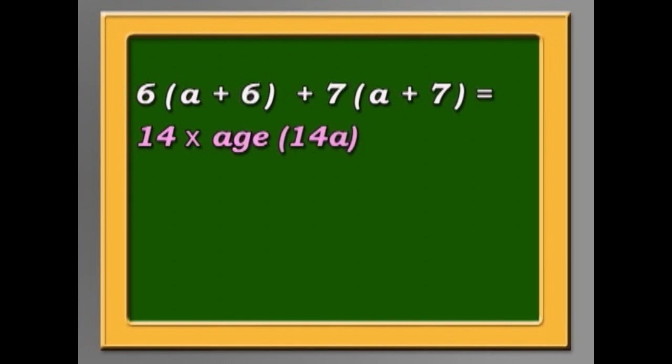Now then, six A plus 36, that's the same as six bracket A plus six bracket. And seven A plus 49, that's the same as seven bracket A plus seven bracket, equals 14A.